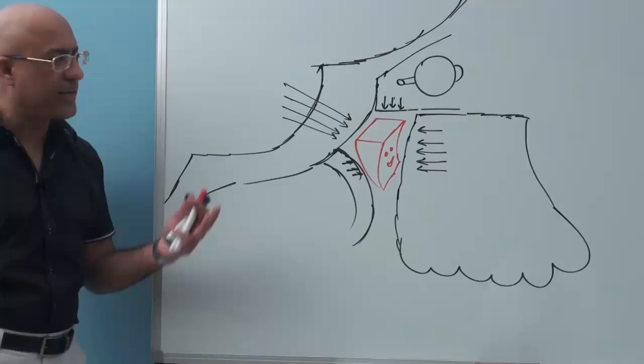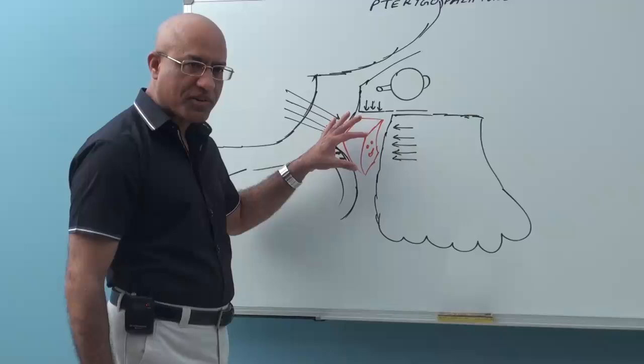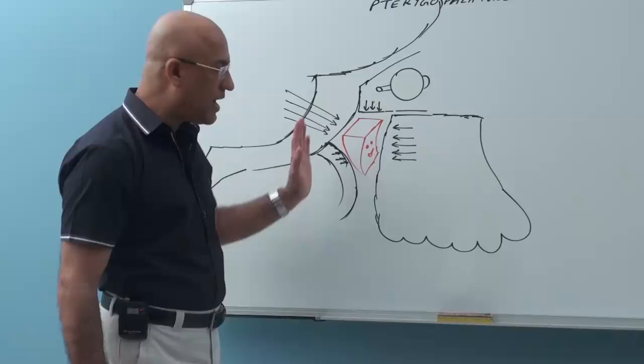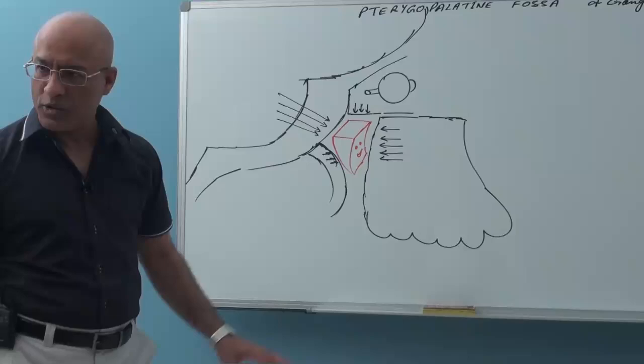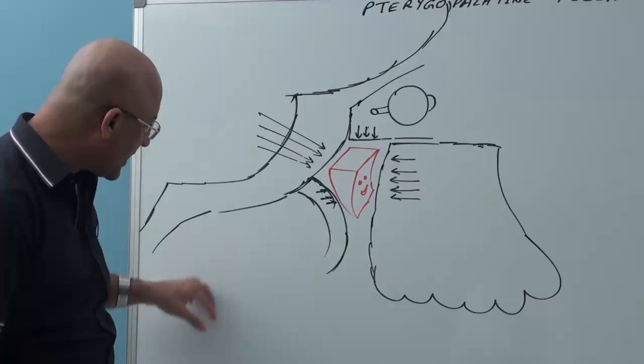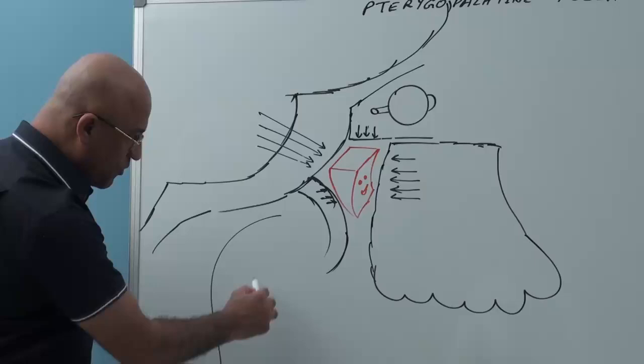Let's define it. The pterygopalatine fossa is a small bony space bounded by bony structures on the lateral side of the skull. It is placed just below the apex of the orbit, just behind the supramedial part of the maxilla, antero-inferior to the middle cranial fossa, and just in front of the pterygoid process of the sphenoid bone. You know its relationship to the nasopharynx — nasopharynx is posteroinferior.